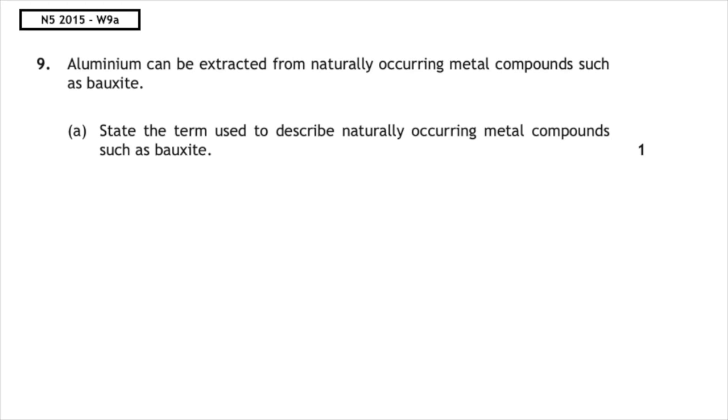This past paper question is from the National 5, 2015 paper, question 9a. Aluminium can be extracted from naturally occurring metal compounds such as bauxite. State the term used to describe naturally occurring metal compounds such as bauxite. These are known as ores.